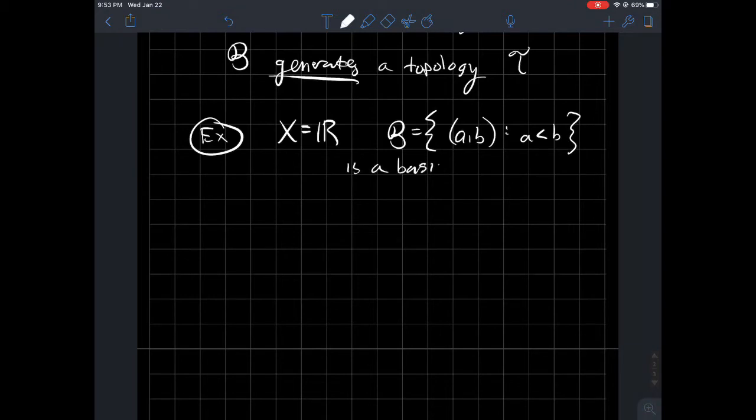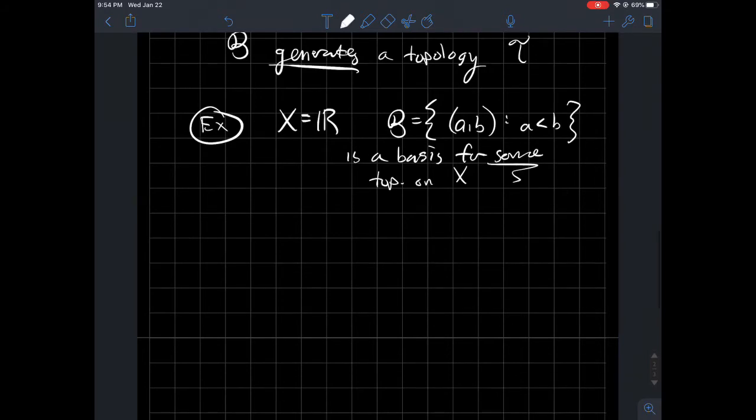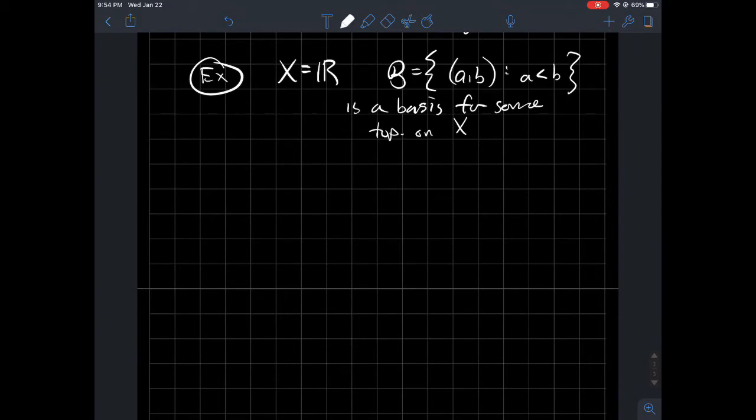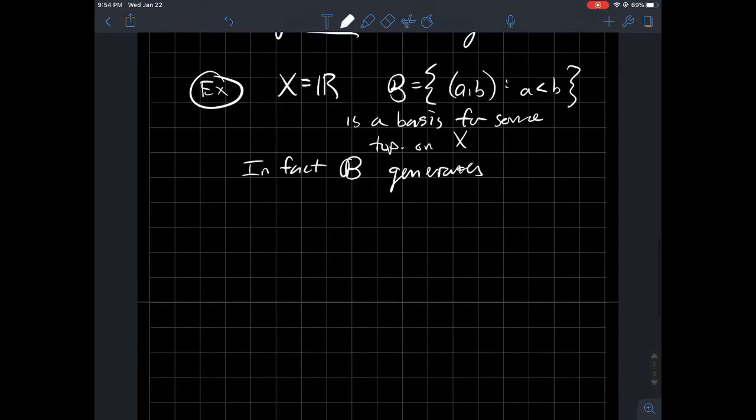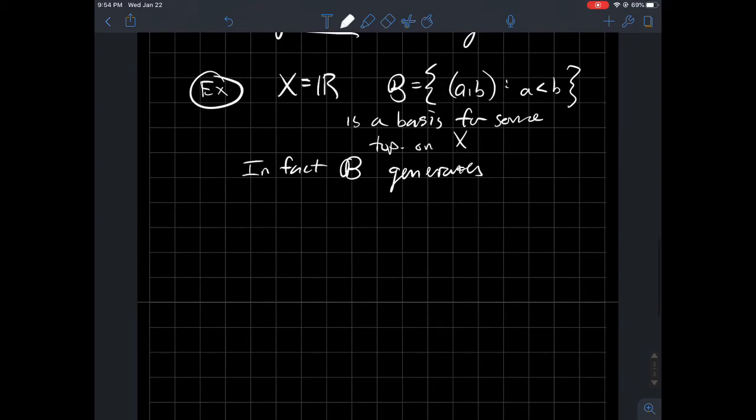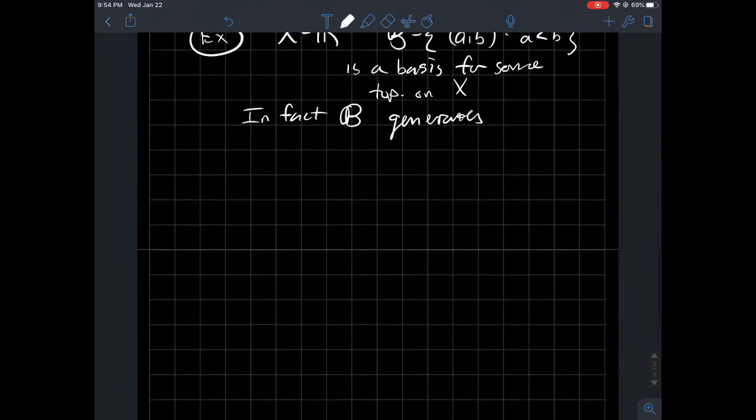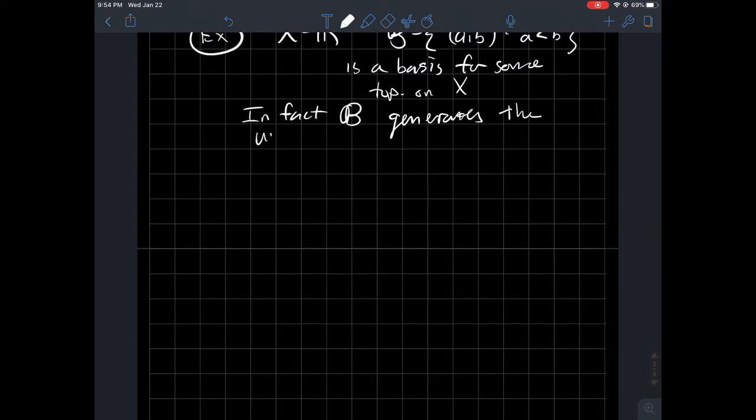B, in this case, is a basis for some topology on X. I haven't told you what the topology is, so what topology would it be? It turns out that B generates, in fact, the usual topology on the real line.